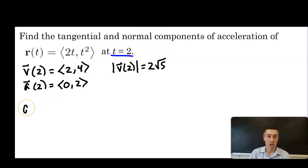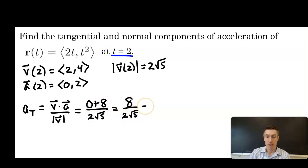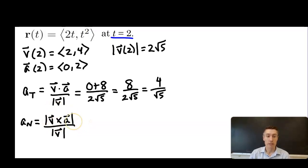The tangential component of acceleration is the dot product of velocity and acceleration over the magnitude of velocity: (0 + 8) over 2√5, which is 8 over 2√5, simplifying to 4 over √5. For the normal component, we need the magnitude of the cross product of velocity and acceleration over the magnitude of velocity.